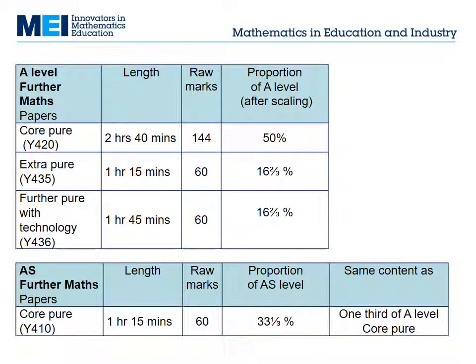The A Level CorePure paper is the longest paper in the suite, assessing 50% of the course in one paper, so the marks have to be scaled so that it's worth 50% of the A Level. The Extra Pure and the FPT units are both minor options; the going rate for these is usually 60 marks in an hour and 15 minutes. The FPT paper gets longer because candidates have to spend some time writing out things like programs they've written. The AS CorePure paper is one hour and 15 minutes long — all the AS papers are this length and they all count for a third of the AS.